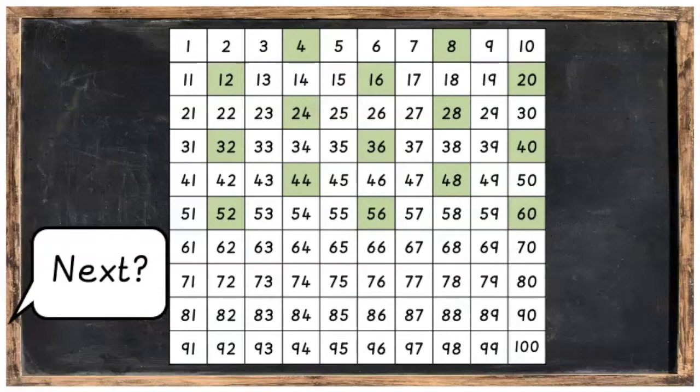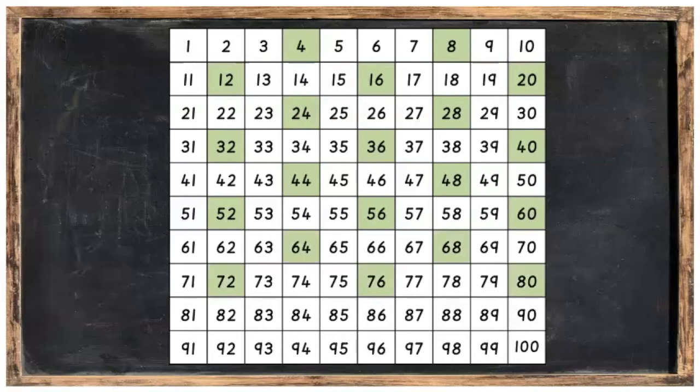Can you think of what's going to come next? So, after the sixty, what's going to come next? Well done. So, we've got sixty-four, sixty-eight, seventy-two, seventy-six and eighty.